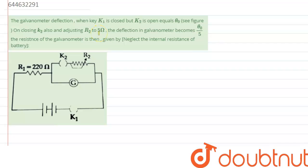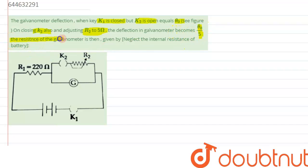Hi everyone. We are given a question which says: the galvanometer deflection when key k1 is closed but k2 is open equals theta naught. On closing k2 and adjusting the value of R2 to 5 ohms, the deflection of the galvanometer becomes theta naught by 5. The resistance of the galvanometer is then given by. We can neglect the internal resistance of the battery.